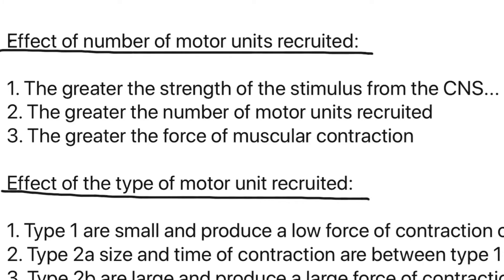Other things you need to know about motor units are the effect of the number of motor units recruited. The greater the strength of the stimulus from the CNS, the greater the number of motor units recruited, which leads to a greater force of muscular contraction. For example, as you increase the weight in the gym, you increase the number of motor units recruited because you want to use more muscle fibres. Lifting a 6kg dumbbell is fairly easy, but lifting a 20kg dumbbell for a bicep curl is very difficult — you need to recruit more motor units for more muscle fibres to be able to do it.